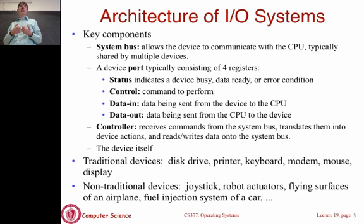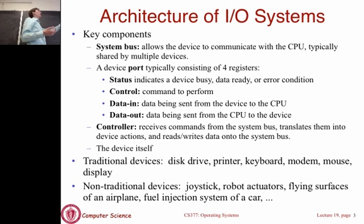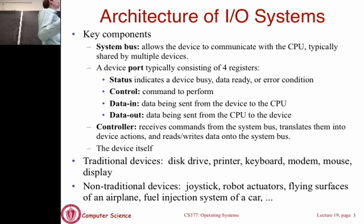First we have a status register that tells us what the device is doing. If the device is doing work, that register will be set to a busy value. It might also tell us that data is ready to be read — so if you issued a request to a device and the I/O device completed it, the status register might say it has data ready. Or it might indicate there was an error from the last instruction.